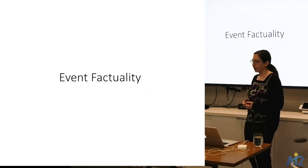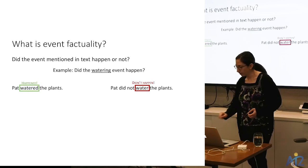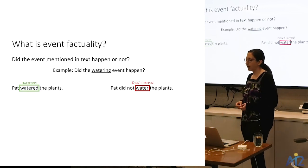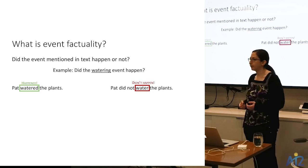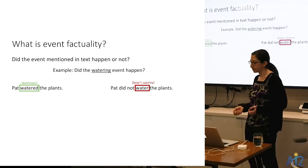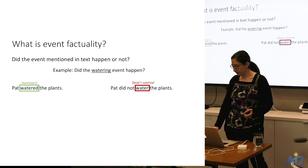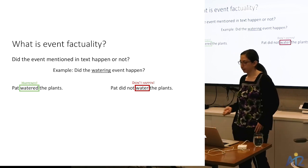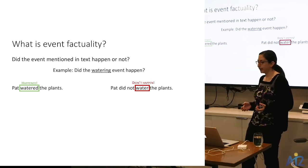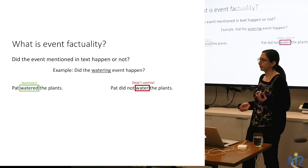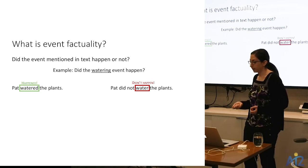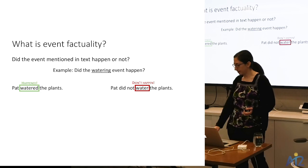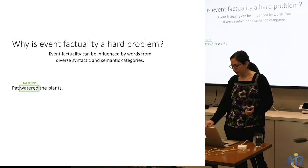In the first part of the talk, I'll discuss my work on event factuality. Event factuality is the task of determining whether or not some event mentioned in text actually happened according to the author. A simple example: 'Pat watered the plants' versus 'Pat did not water the plants.' In the first case, we have a watering event that happened; in the second, it did not.